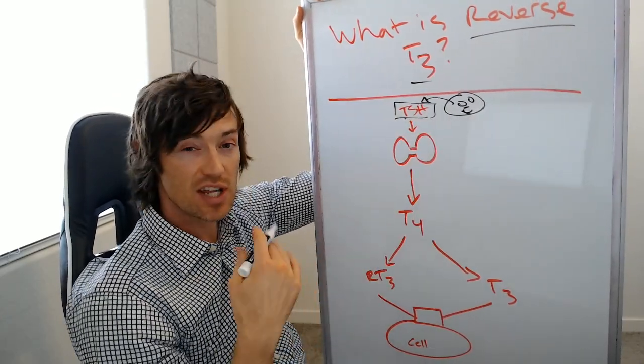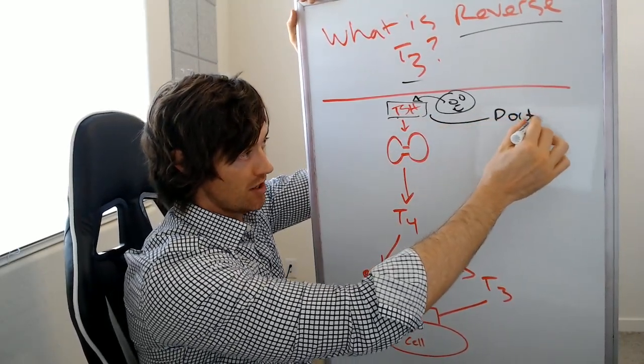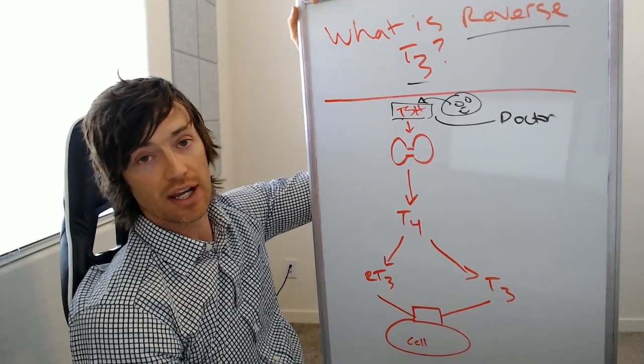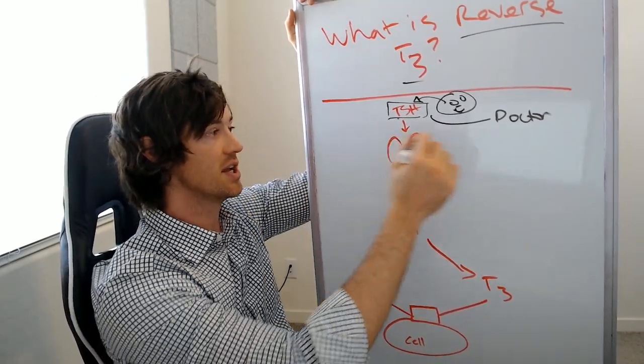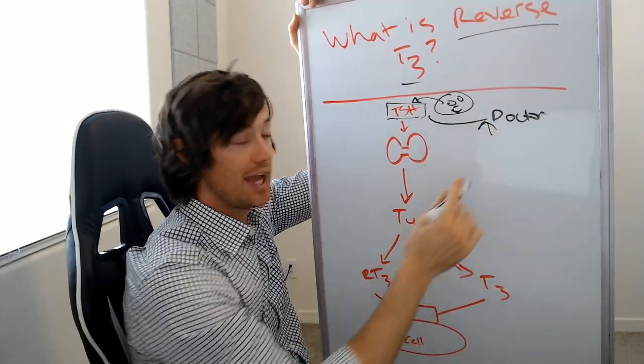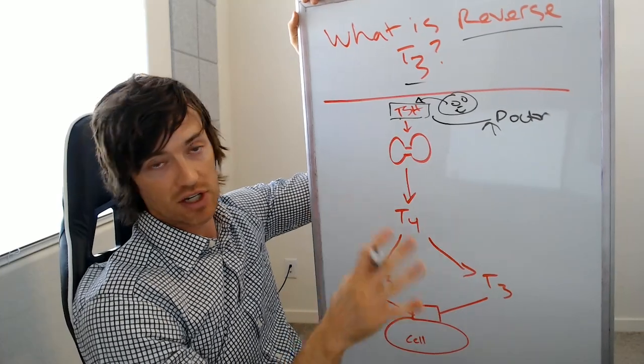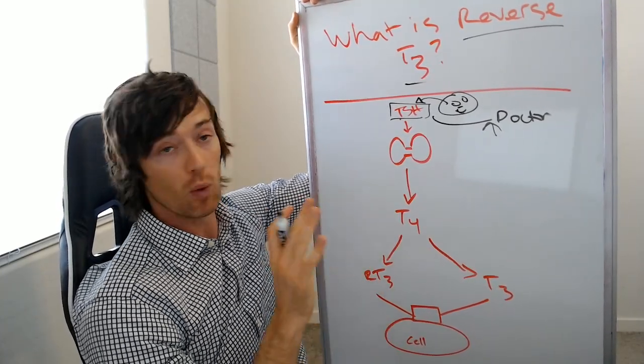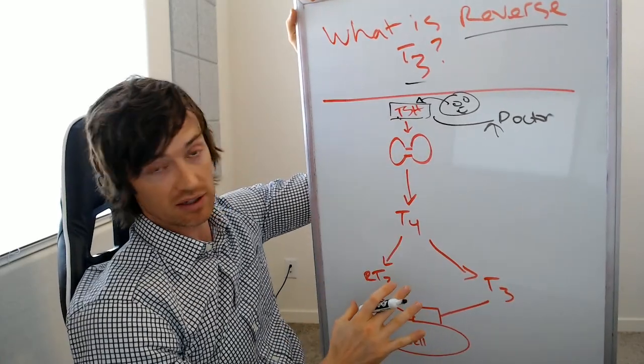Now TSH stands for thyroid stimulating hormone. And this is the thing that your doctor is checking. This is probably the reason that you were diagnosed with low thyroid or Hashimoto's because your doctor checked this test and found that it was high. And that means that you have a low thyroid. We'll talk about TSH. I have other videos on TSH if you want, but that's generally how everything goes. Now, what you need to know is that TSH is one lab test, but there's lots more that we can talk about.